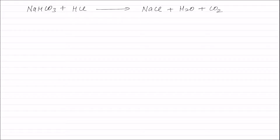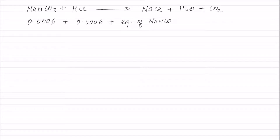Therefore, equivalence of sodium carbonate present in the mixture (0.0006 equivalence) plus equivalence of NaHCO₃ formed from sodium carbonate (also 0.0006 equivalence) plus equivalence of NaHCO₃ present originally in the mixture = equivalence of HCl. The equivalence of HCl = normality of HCl (1/20) × volume of HCl in liters (30/1000).